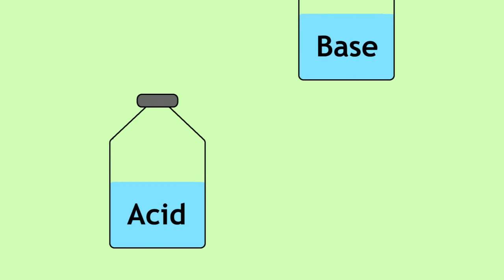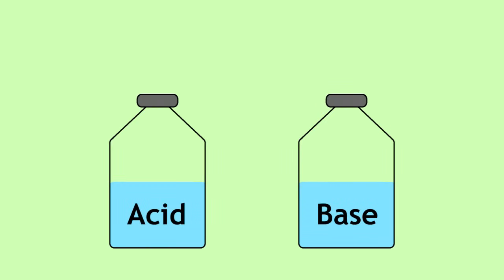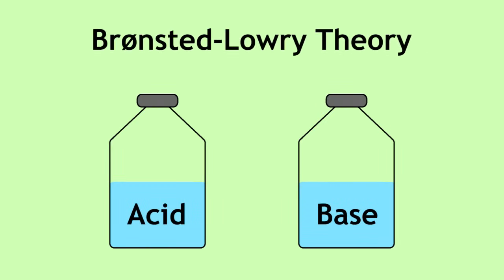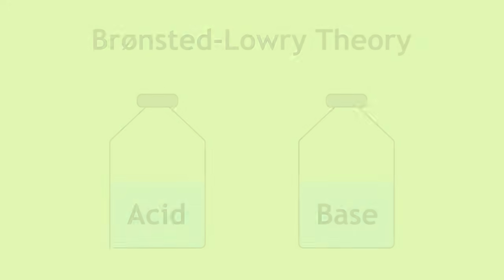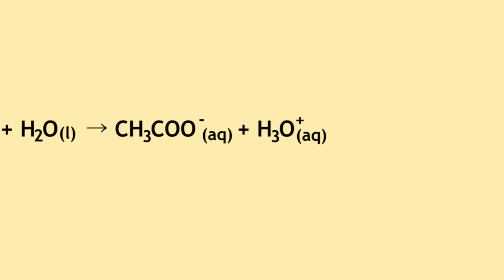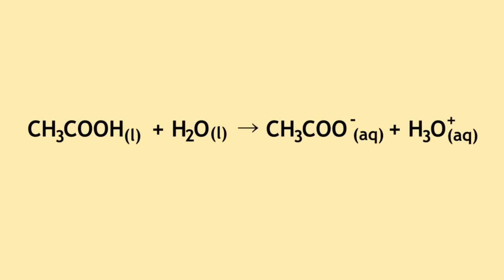As we have learned, an acid-base reaction, according to the Bronsted-Lowry theory, involves the transfer of a proton. Let's now look at what has been formed from this reaction.